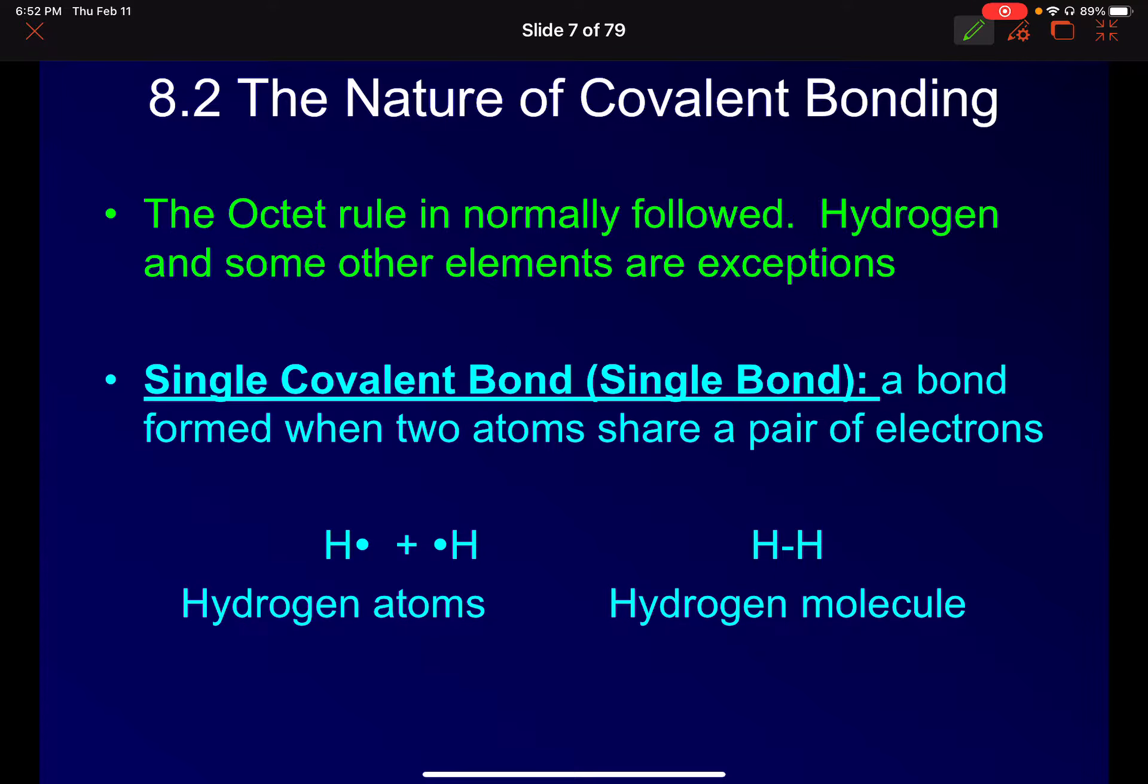So the nature of covalent bonding, the octet rule is normally followed except for hydrogen, helium, and lithium. Lithium is not going to covalently bond, but hydrogen, for example, needs only two electrons to meet what we'd say the octet rule. It only has one S orbital. So therefore it can only fit up to two electrons in that orbital to feel like helium. So it meets the octet rule. So this octet rule is really for everything periods two and below. So two through seven. But for the first period, we talk about two electrons meeting the need.